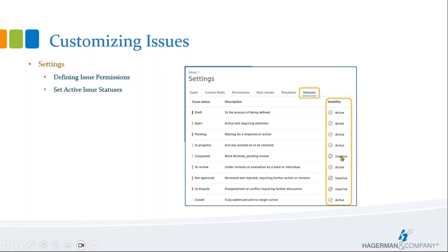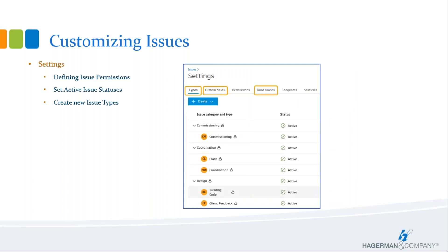On the statuses, you can see there are a couple of inactive statuses, meaning they are not available as issue options. You can review the different statuses and determine which ones you want active in your project. Within types, you also have root cause and custom fields. You can determine what types you want in your project and turn them on and off. You can create additional types, additional root causes, or add custom fields. You can add more or deactivate some if you don't want them available.